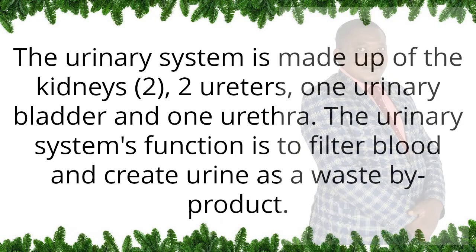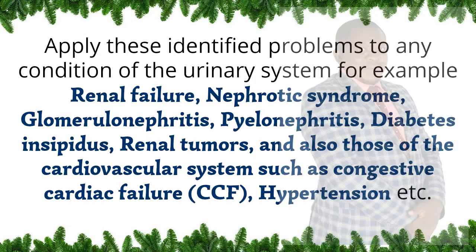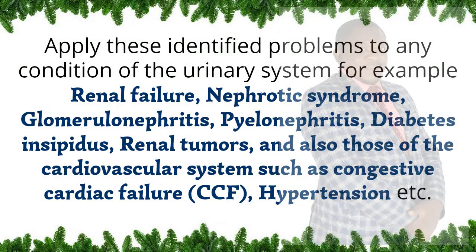The urinary system is made up of the kidneys, two ureters, one urinary bladder, and one urethra. The urinary system's function is to filter blood and create urine as a waste by-product. Note that any condition affecting the urinary system also affects the cardiovascular system — the heart — because they work hand in hand; you cannot separate the kidneys from the heart. Apply these identified problems to any condition of the urinary system, for example renal failure, nephrotic syndrome, glomerulonephritis, pyelonephritis, diabetes insipidus, renal tumors, and also those of the cardiovascular system such as congestive cardiac failure (CCF), hypertension, etc.